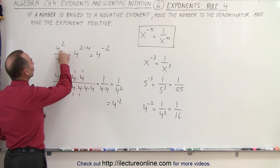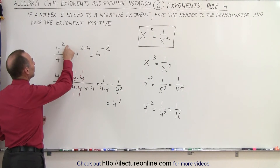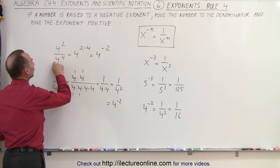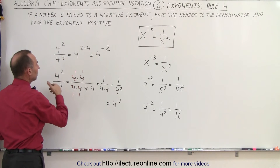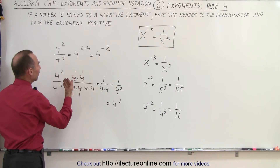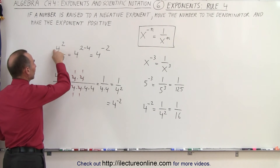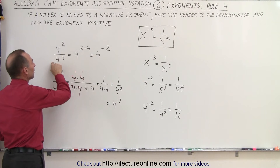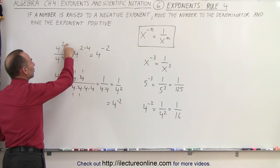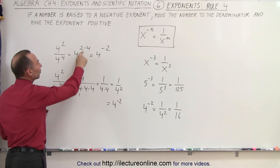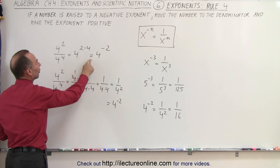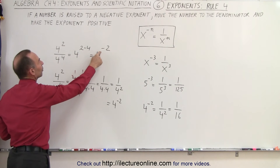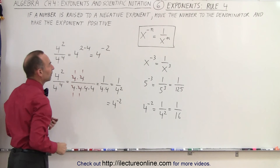Let's say we have 4 to the second power divided by 4 to the fourth power. The rule says that when the bases are the same and we're dividing, we subtract the exponents. So this is 4 to the 2 minus 4, which is 4 to the minus 2.